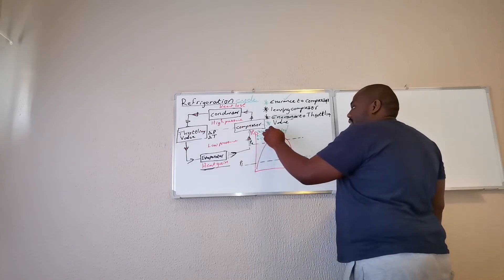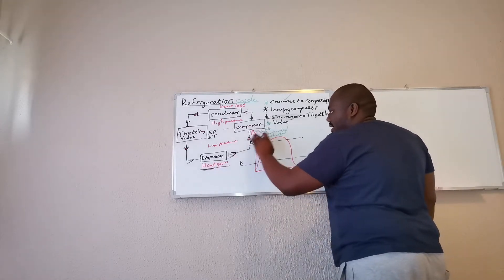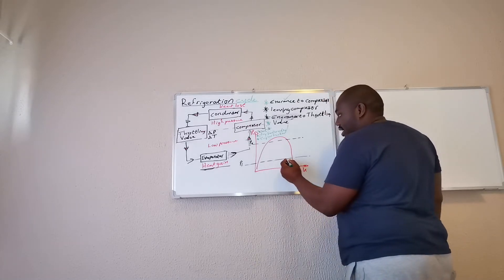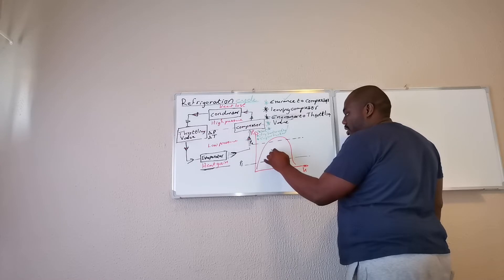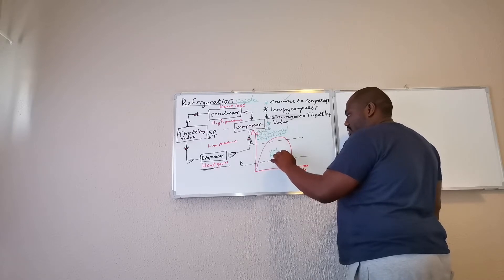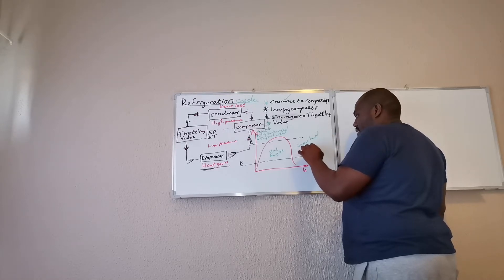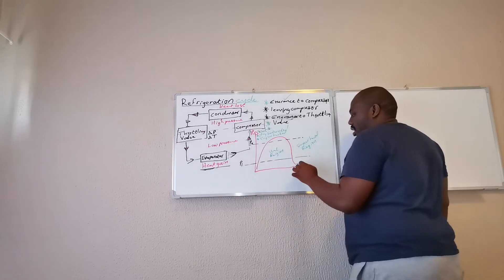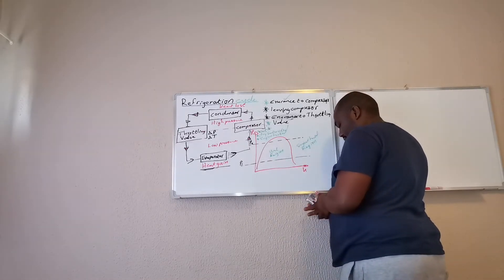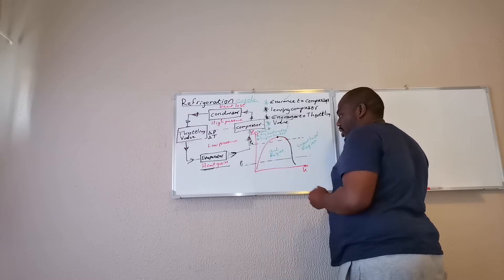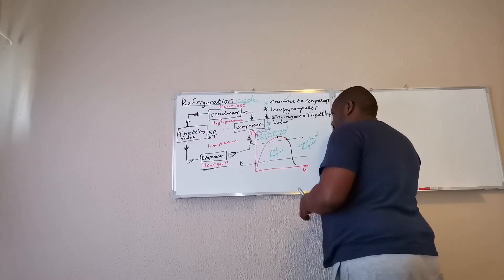So let's assume that it is entering my compressor wet. It simply means that it's entering at a low pressure and it's wet. This would be your wet region inside. Everything enclosed under this curve is your wet region. Everything beyond this curve would be the superheated region. And everything on this line, up until the critical point there, everything on that line is dry saturated.